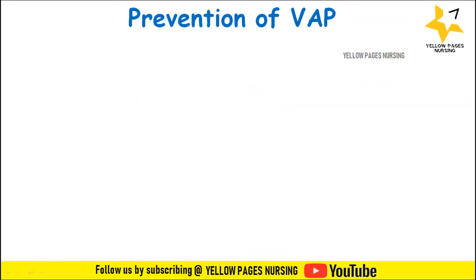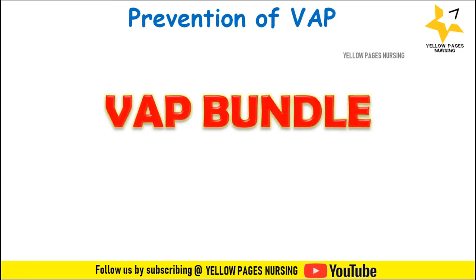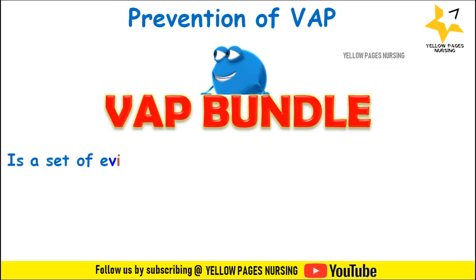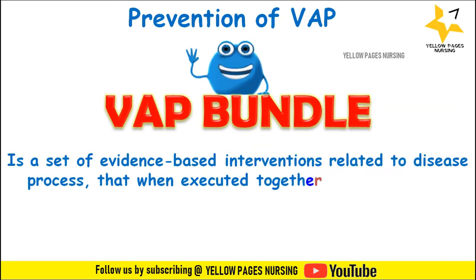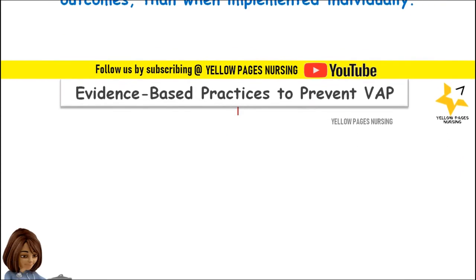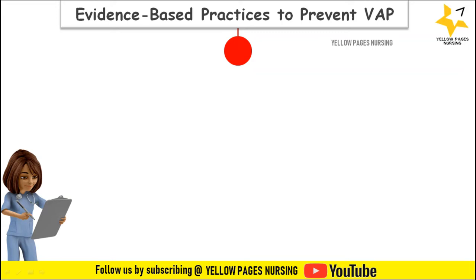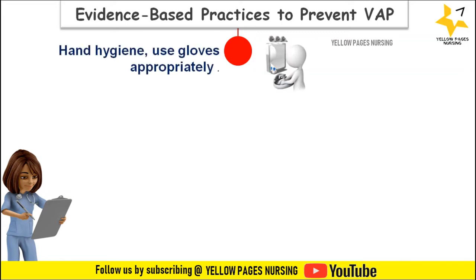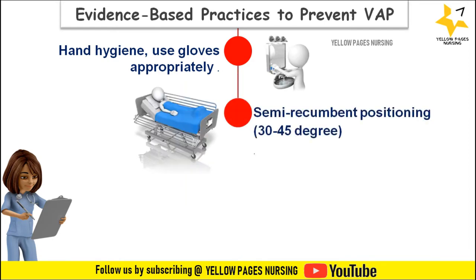For prevention of VAP, hospitals follow the VAP bundle for patients who are on mechanical ventilation. The VAP bundle is a set of evidence-based interventions that when executed together result in better outcomes than when implemented individually. The first evidence-based practice is hand hygiene and using gloves appropriately. The head of bed should be elevated to 30 degrees, which can be done with the help of the angle indicator present on the bed.